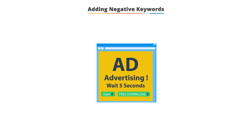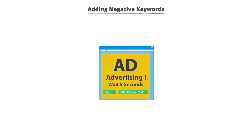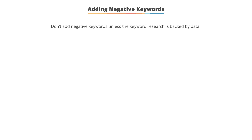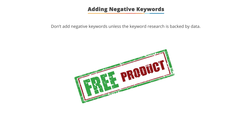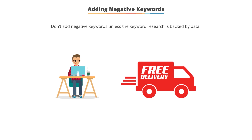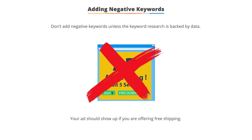Once you're advertising and getting data, you'll see a lot of search terms causing your ads to show. If you see search terms you don't want to show for, then you can make them negative keywords. Always be cautious about adding negative keywords without any data. For instance, a lot of companies don't sell free things, so they add the negative keyword 'free.' However, if someone searches for your product with the term 'free shipping' and you have 'free' as a negative keyword, your ad can't show — and if you offer free shipping, you want to show in those instances.